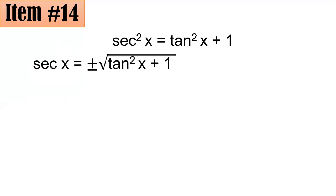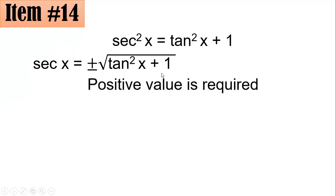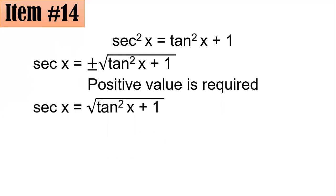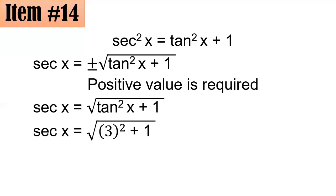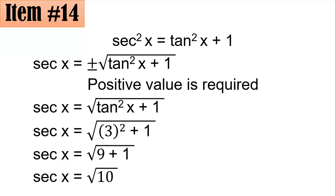To solve for secant x, we take the square root of both sides. Since the index is even, we get plus or minus, but the problem asks for the positive value only. So secant x equals the square root of tangent squared x plus 1. Since tangent x is 3, we get the square root of 9 plus 1, which is the square root of 10. Letter B.